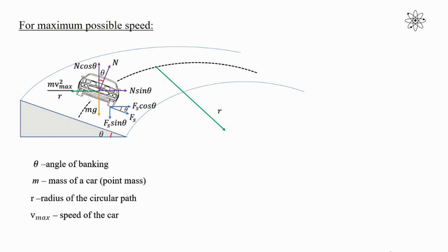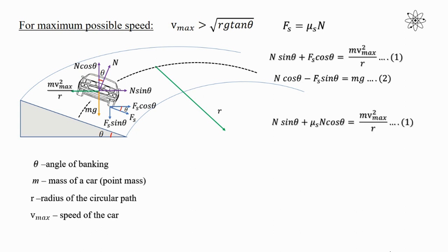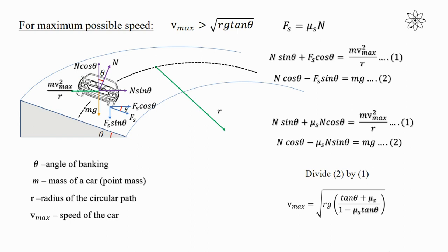Now let's discuss the maximum possible speed. v_max is the maximum possible speed over the most safe speed. In this case the force of static friction is at its limiting value: fs = μs · N. Substituting into the equations: N sin theta + μs·N cos theta = m·v_max²/r and N cos theta − μs·N sin theta = mg. Dividing and simplifying, we get: v_max = √[ rg · (tan theta + μs) / (1 − μs tan theta) ].